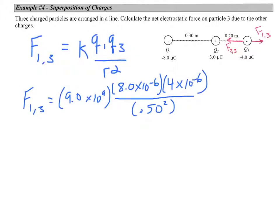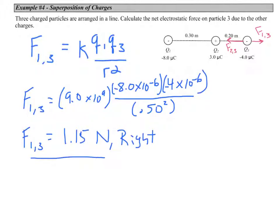The magnitude of charge one is eight microcoulombs — that's times 10 to the negative six — and Q3 is four microcoulombs, also times 10 to the negative six. Both of these are negative charges. Working this out, force one on three ends up being 1.15 newtons to the right.